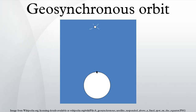Elliptical geosynchronous orbits can be and are designed for communication satellites in order to keep the satellite within view of its assigned ground stations or receivers. A satellite in an elliptical geosynchronous orbit appears to oscillate in the sky from the viewpoint of a ground station, tracing an analemma in the sky. Satellites in highly elliptical orbits must be tracked by steerable ground stations. The Infrared Space Observatory was in a highly elliptical geosynchronous orbit with an orbital height of apogee 70,600 km and perigee 1,000 km, controlled by two ground stations.